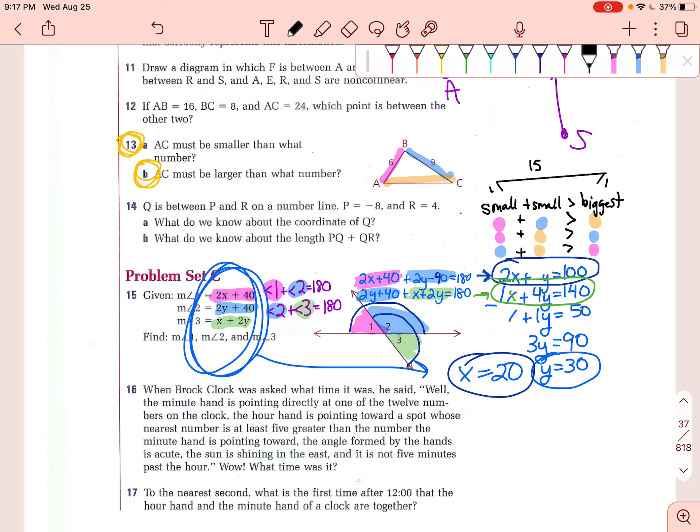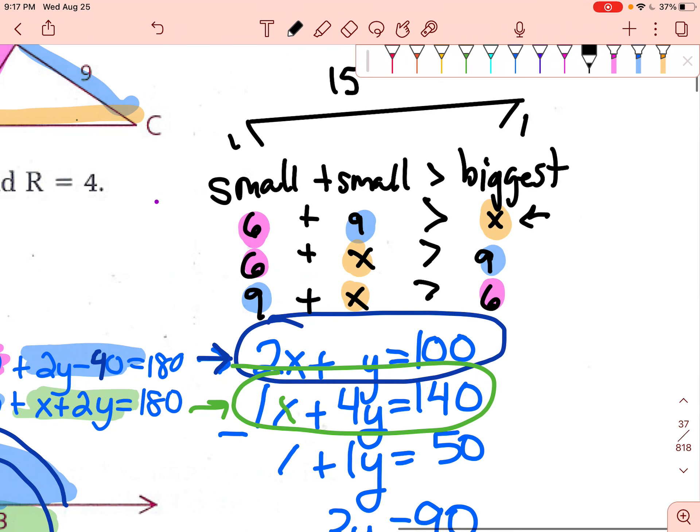Now we can obviously go in and anywhere we see blue, we can put a nine. Anywhere we see a pink, we can put a six. And anywhere we see an orange, we can put an X because we're trying to figure out how big that is. Solving my first inequality right here. And I can zoom in a little bit. Solving this first inequality, we have 15 has to be bigger than X. Or X has to be smaller than 15.